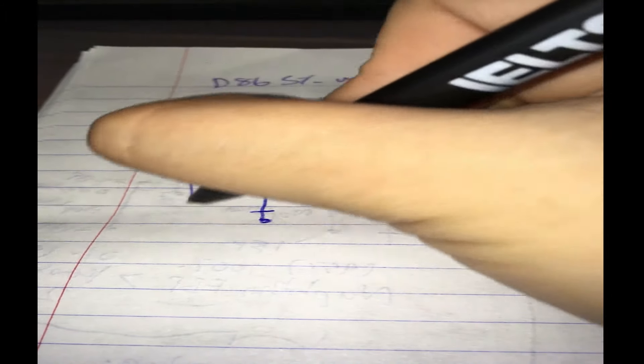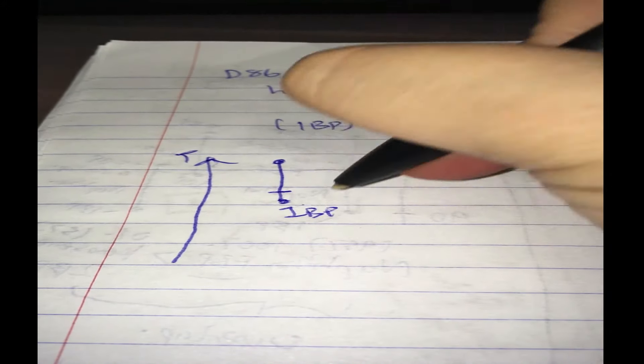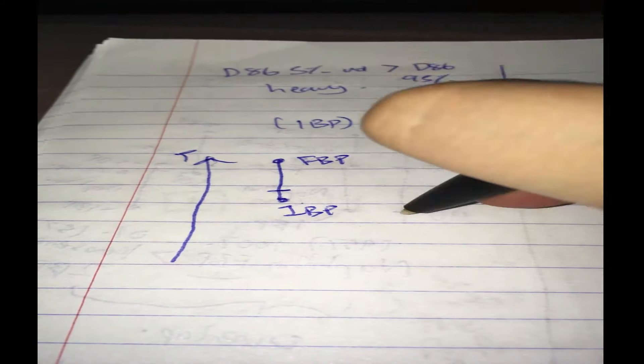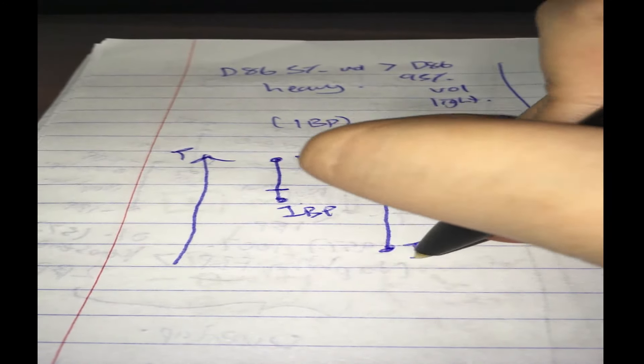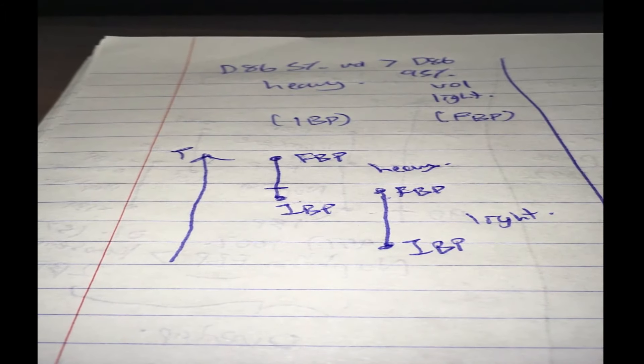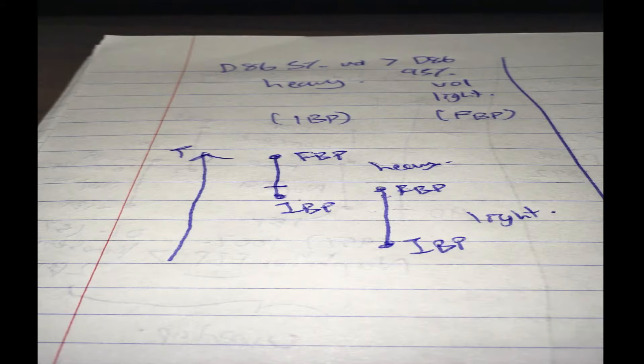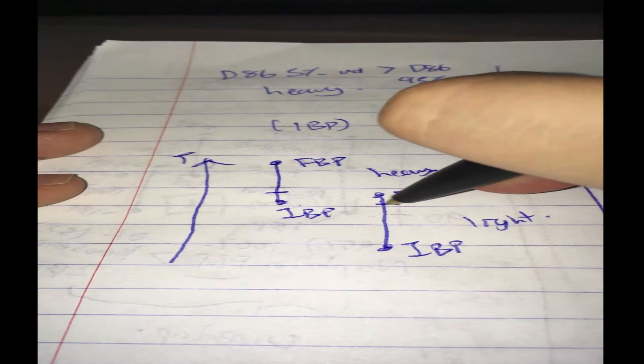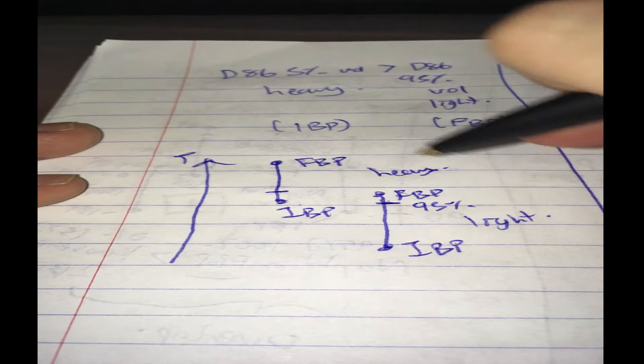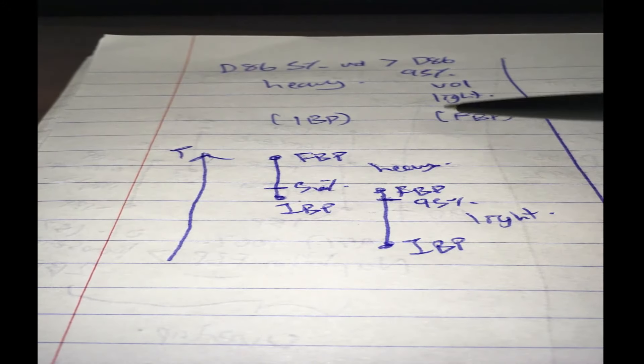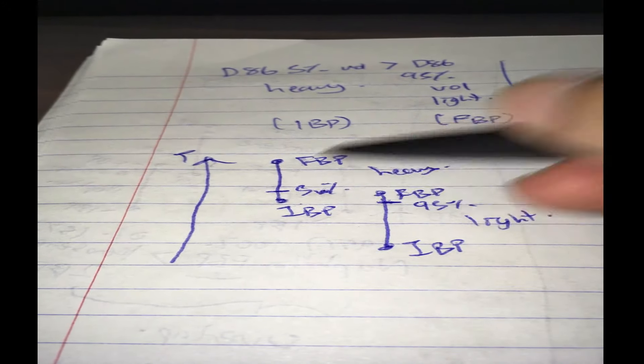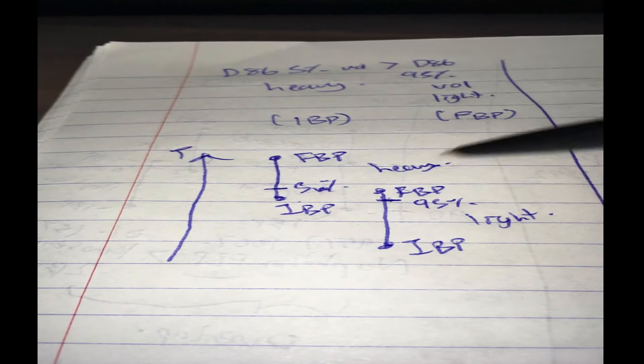If you're ever confused just draw this out again. So this is the IBP, FBP, IBP, FBP. So this is the light because it's more volatile, this is the heavy. It doesn't just apply to naphtha and kerosene, it can apply to kerosene and diesel and so on and so forth. So this is 95%, this is 5%. So 95% should be lower than 5%. So this is called a gap.